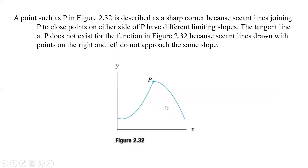In Figure 2.32, there is a sharp point at p. As we approach from the left, we get one slope or limit, and approaching from the right gives another limit. Those two limits are different, so we're not able to find the overall limit of the tangent line — it doesn't have the same slope from the left as from the right. Sharp points don't have a tangent line whose slope we can find.